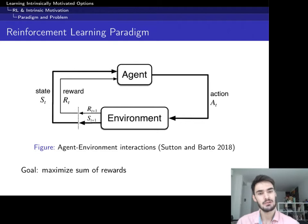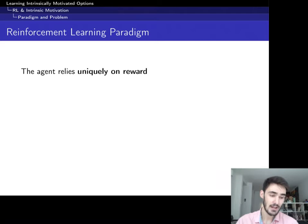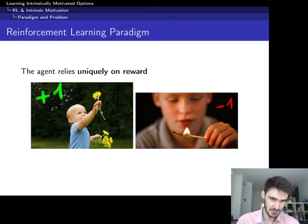The reinforcement learning problem is usually represented with this diagram where the agent performs actions, and the environment answers with states, which are observations, and rewards, which are scalars. Basically the goal of reinforcement learning is just to maximize the sum of rewards. That fact alone is interesting because it means that the agent relies uniquely on reward to bring about any behavior, and only on reward to guess whether a behavior should be encouraged or whether a behavior should be avoided.